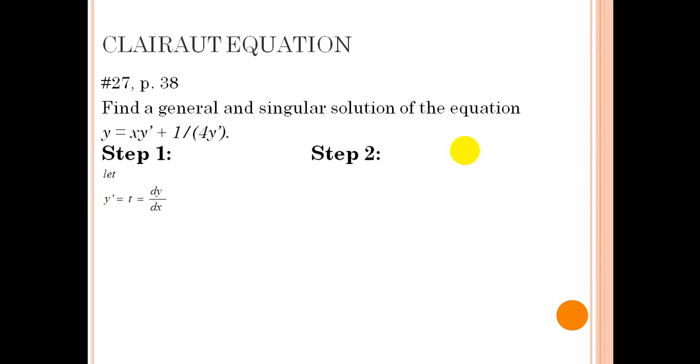let y prime be equal to t where y prime is equal also to dy dx. So by substitution, our equation here is substituted by the value of t which will result to y equals xt plus 1 over 4t. And by deriving this,